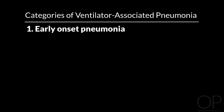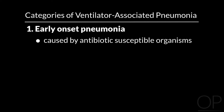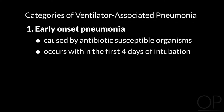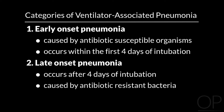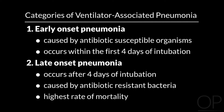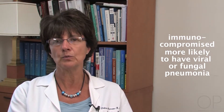There are two categories of ventilator-associated pneumonia, and in general, bacteria are the most frequently isolated pathogens. Early onset pneumonia is usually caused by antibiotic-susceptible organisms and occurs within the first four days of intubation. Late onset occurs after four days of intubation, is usually caused by antibiotic-resistant bacteria, and has the highest rate of mortality.